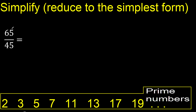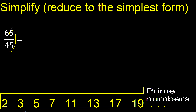Can 65 and 45 be divided by 2? No, because the last digit is not even. They cannot be divided by 3 because 65 cannot be divided by 3.